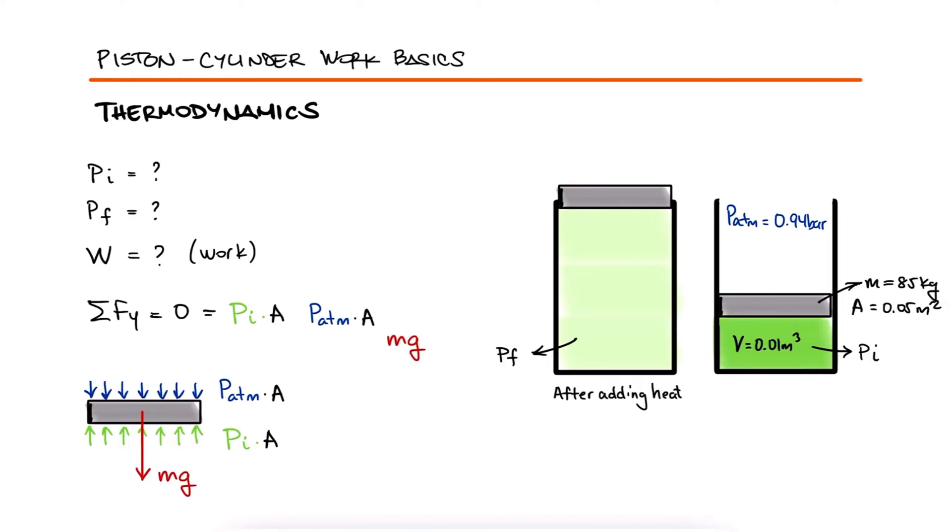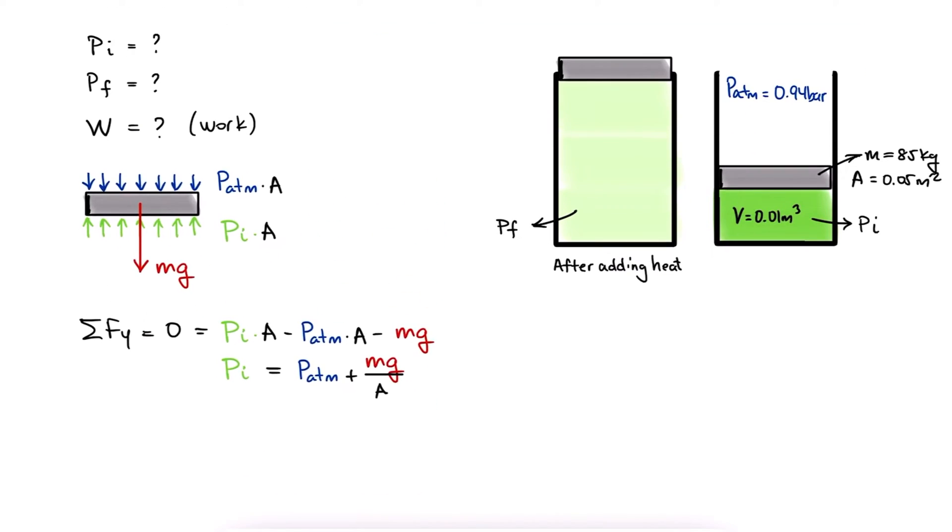Solving for the initial pressure that we are finding, we get P atmospheric plus mg over A. We substitute the values we have for atmospheric pressure, mass, g, and area, and we notice that the units for the terms on the right are not consistent.